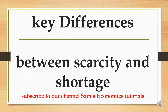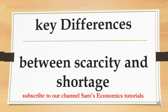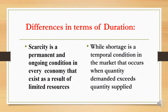Differences in terms of duration: scarcity is a permanent and ongoing condition in every economy that exists as a result of limited resources, while shortage is a temporal situation that occurs when quantity demanded exceeds quantity supplied.